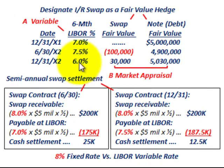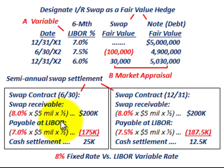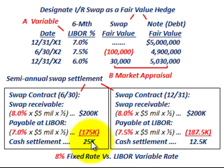Let's look at the semiannual swap settlement. For the 6/30 date, the swap receivable is based on receiving the fixed rate of 8% — that's 8% times $5 million for half a year, which equals $200,000. The payable is based on LIBOR: the 7% variable rate times $5 million for half a year equals $175,000. Comparing the $200,000 receivable to the $175,000 payable gives a cash settlement of $25,000, which Corp A receives.